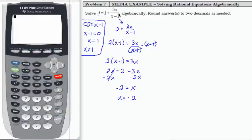And negative 2 is in the domain of my rational part of my equation. So I'm going to declare that that is my solution.